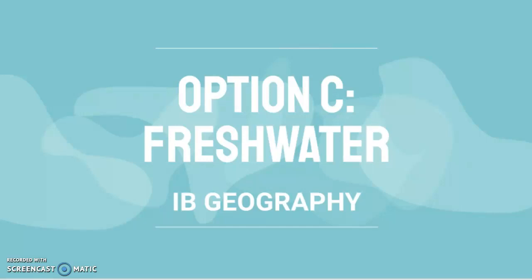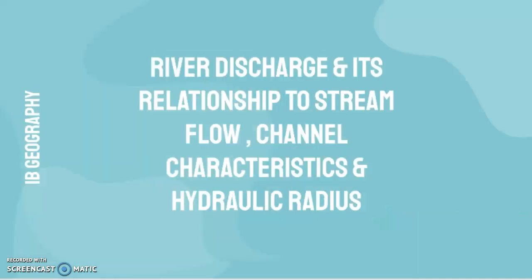This is the second video of Option C: Fresh Water for IB Geography. This video is about river discharge and its relationship to stream flow, channel characteristics, and hydraulic radius.